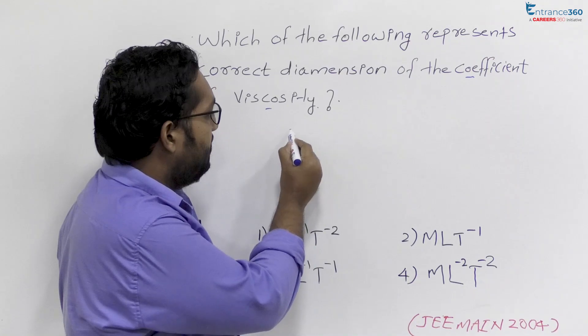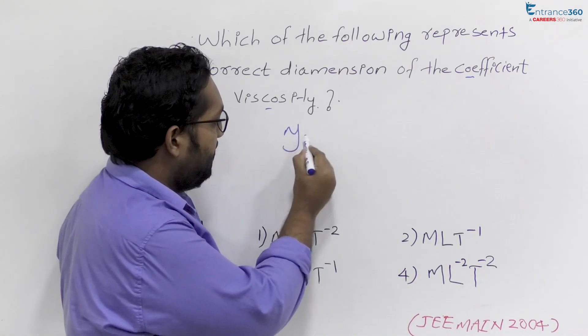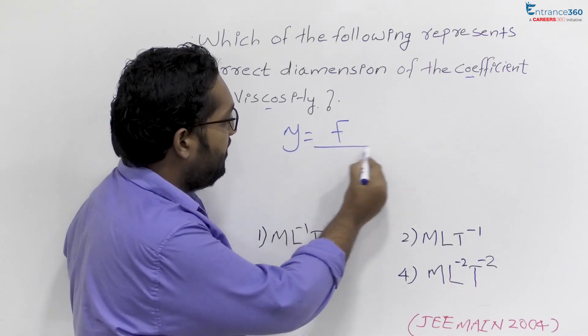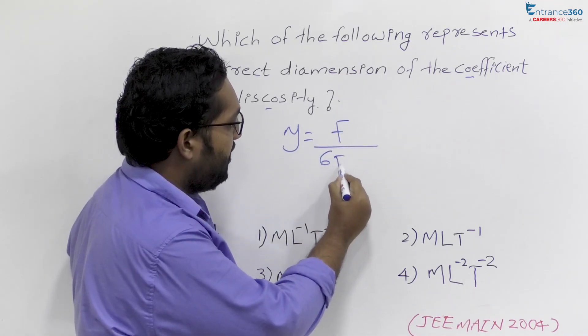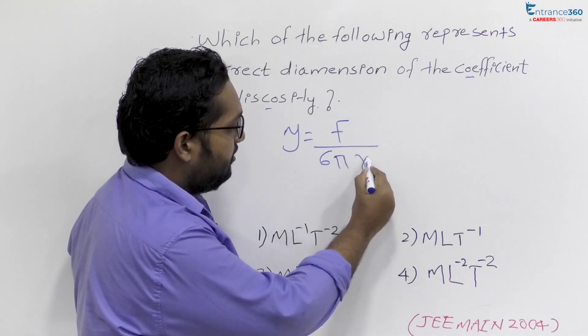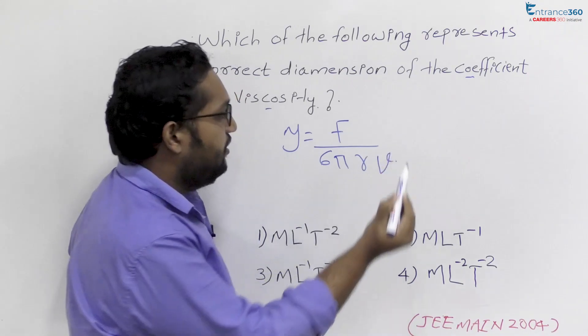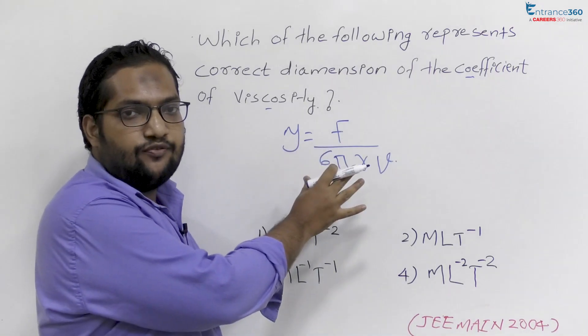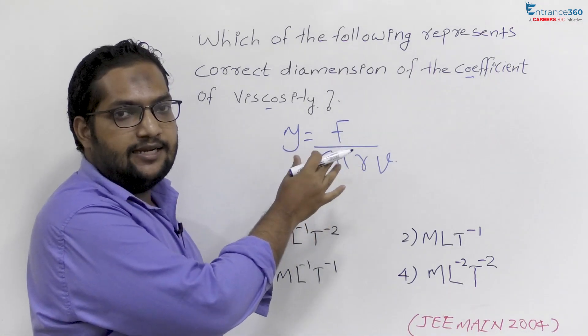We have a relation: coefficient of viscosity eta equals F divided by 6πR into velocity of liquid. So we will take the dimension of this equation, let's see.